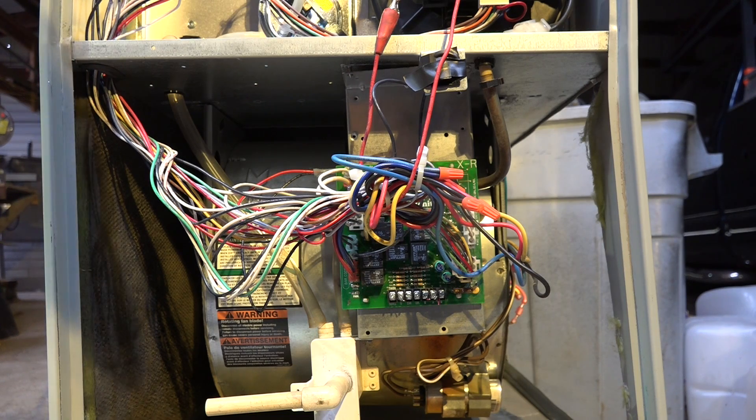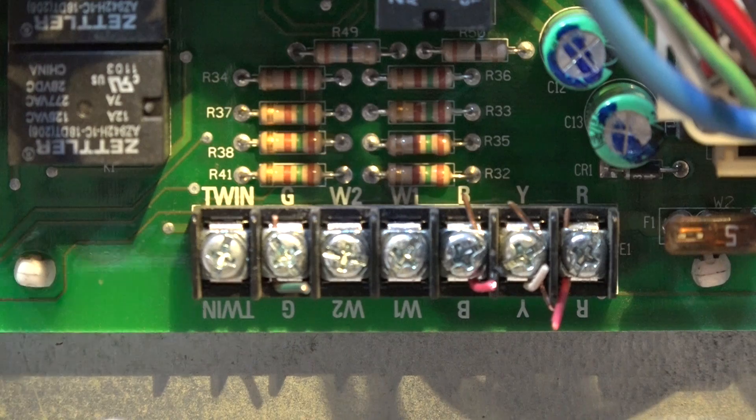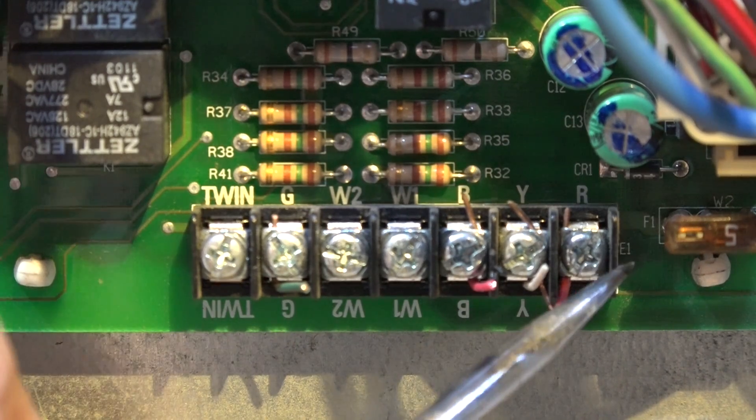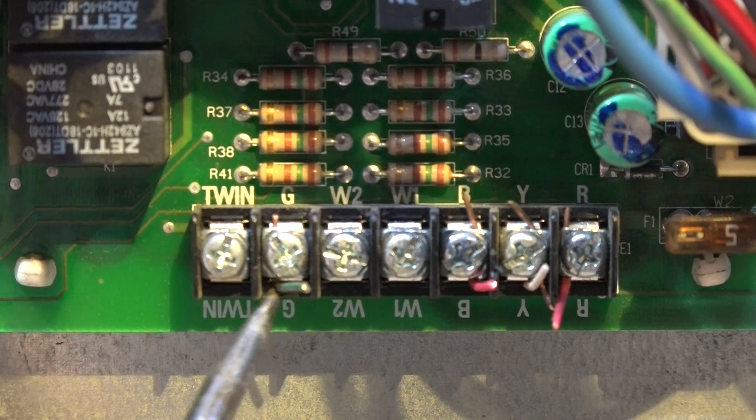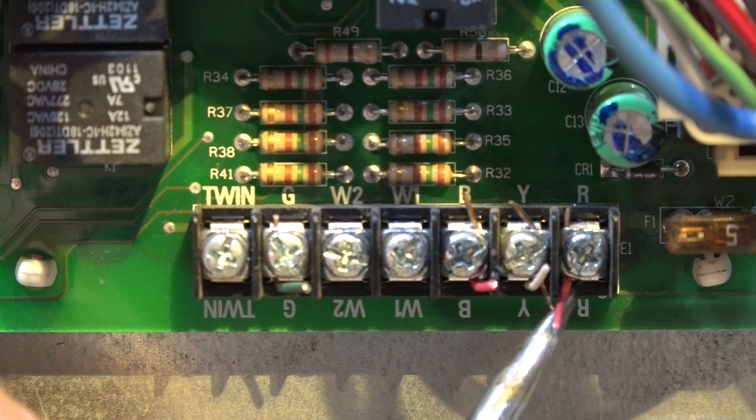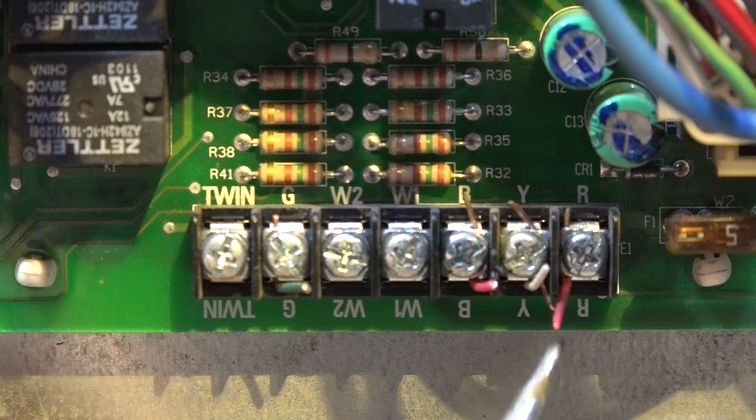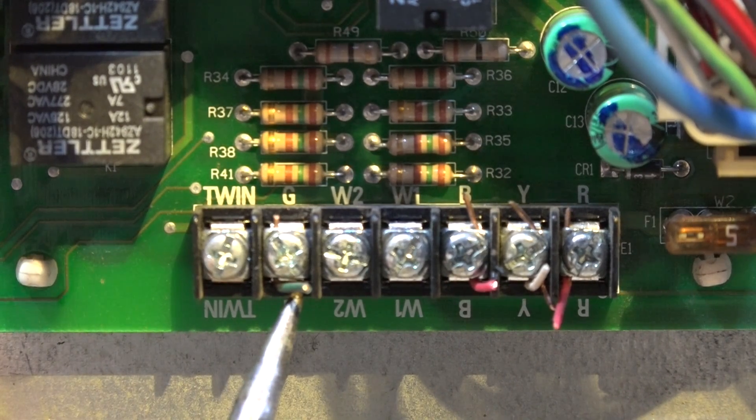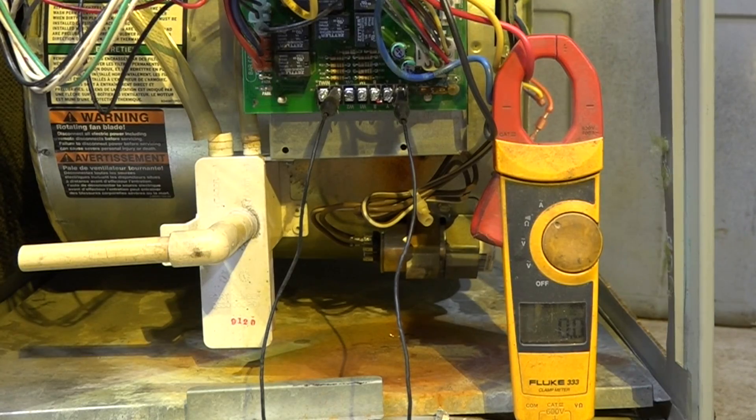So the way it's set up—let's get close to this thing—when I energize from R to G right here, then the fan goes to low speed. If I energize R to Y and R to G, then it'll go to high speed. And I'm going to demonstrate this now. If we look at what I've got here...